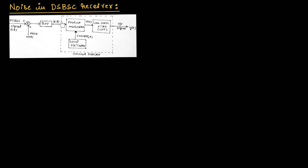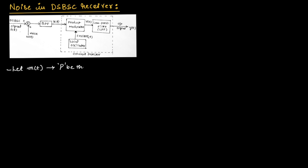Let us consider the model of DSBSC receiver as shown in this figure. This DSBSC receiver uses a coherent detector to demodulate the signal. The signal S(t) and W(t) are added across the channel and given as input to the receiver. They are input to the bandpass filter, which produces output X(t). X(t) is given as input to the product modulator. Let M(t) be the message signal and capital P be the average power of M(t).